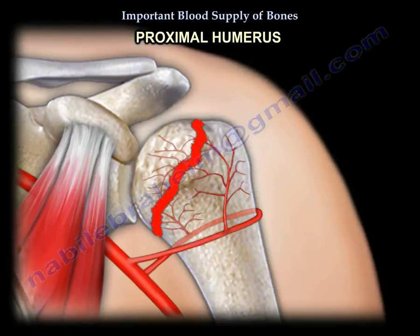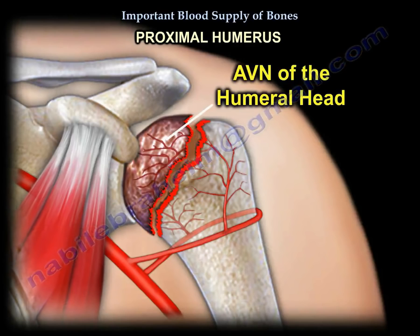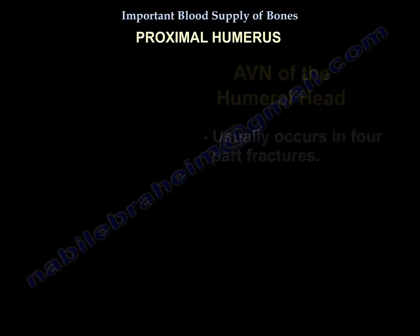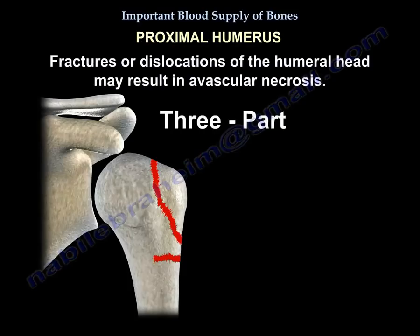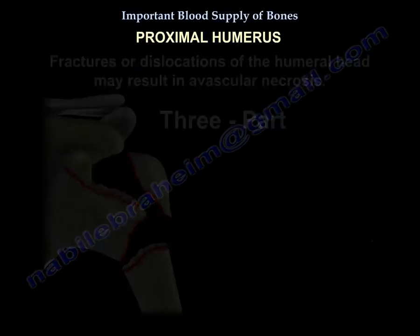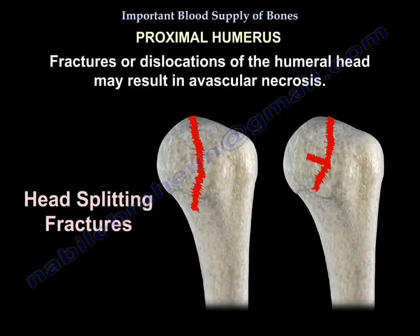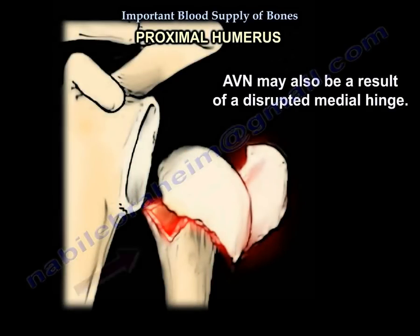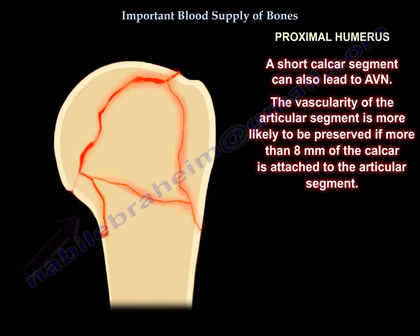What is not controversial is that AVN usually occurs in four-part fractures and in fracture-dislocation of the humeral head. It can also occur in head-splitting fractures or due to disruption of the medial hinge. A short calcar segment can also lead to avascular necrosis. The vascularity of the articular segment is more likely to be preserved if more than 8 mm of the calcar is still attached to the articular segment.